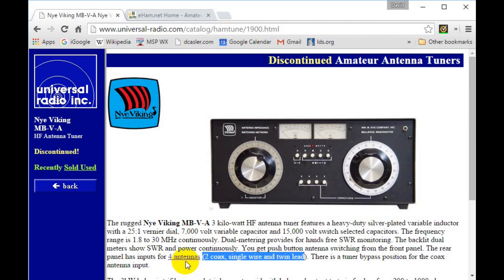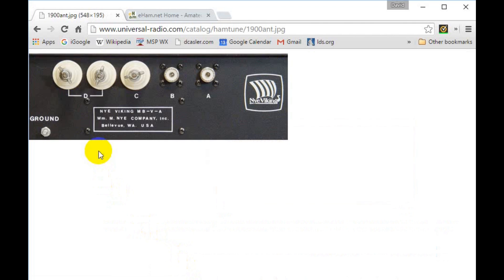In fact, if we click through, we can see the back of the tuner showing that these two terminals are used for balanced line, this one for the long wire, and these two for coax. Now we can go further.